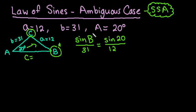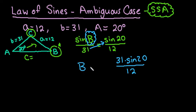So what we want to do is we want to find angle B. To do that, I want to get B by itself. The first thing I need to do is move the 31 to the other side by multiplying. So I have 31 times sine 20 over 12. And then because I'm looking for an angle, I'm going to do the inverse sine of that value.